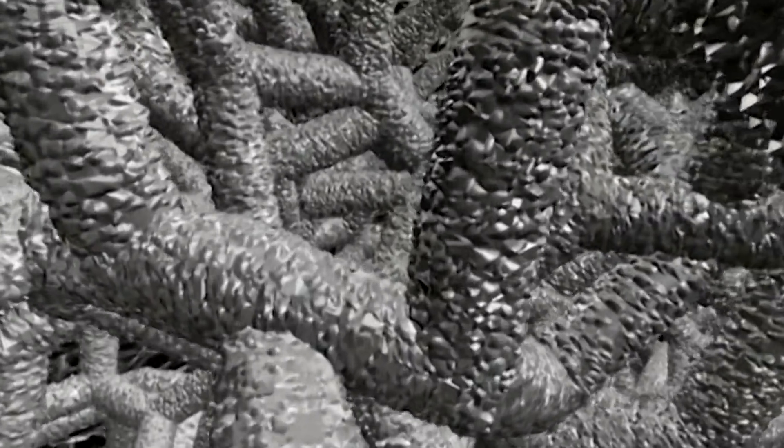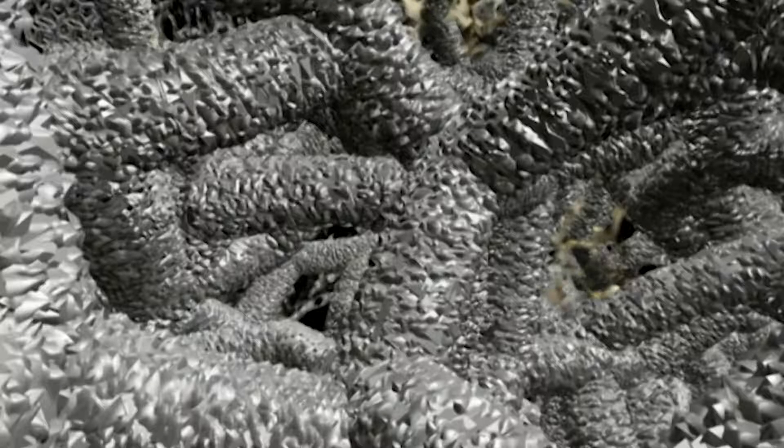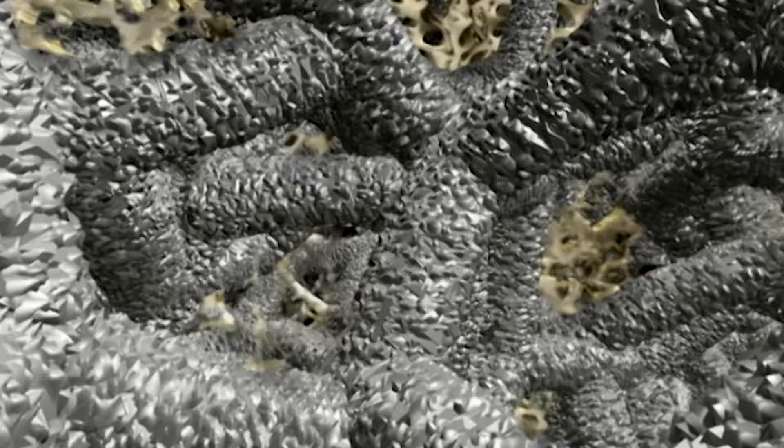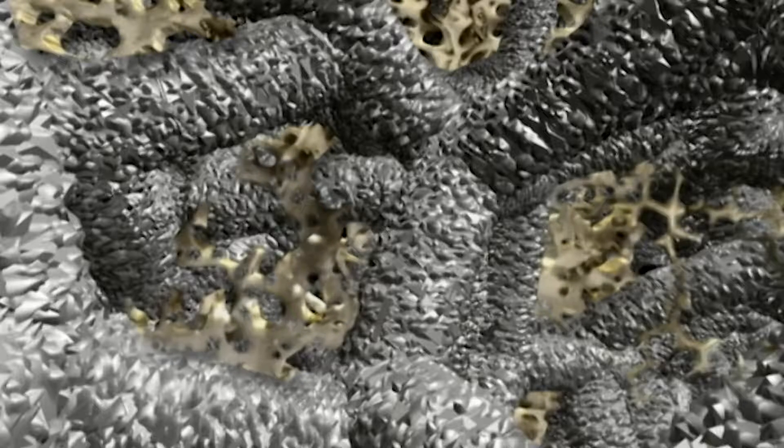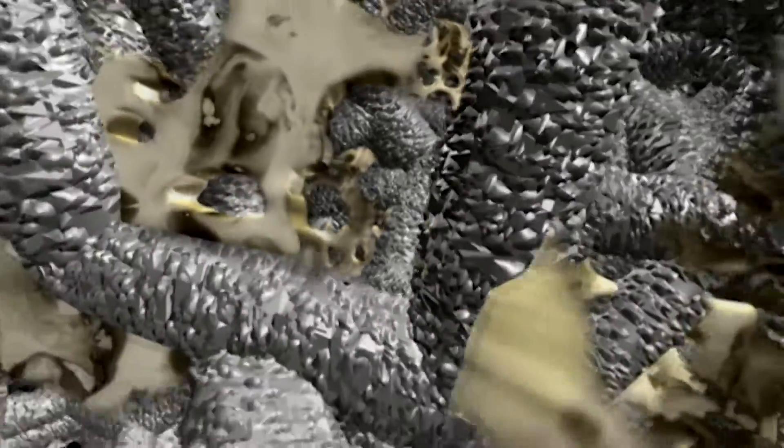Trabecular metal material has a high coefficient of friction against bone and fatigue properties similar to trabecular bone. This unique structure provides an excellent matrix for bone and soft tissue ingrowth. Tissue not only grows into the pores but interconnects.